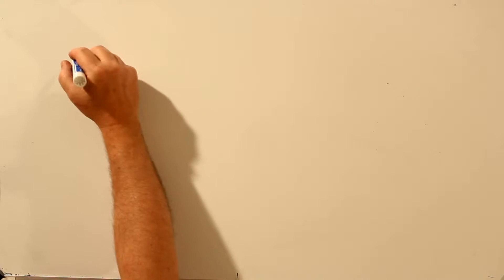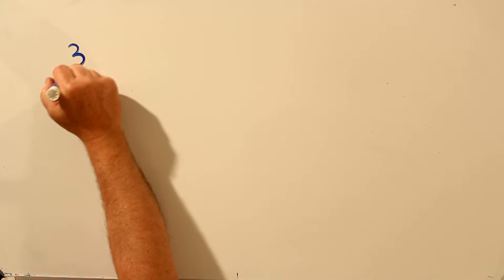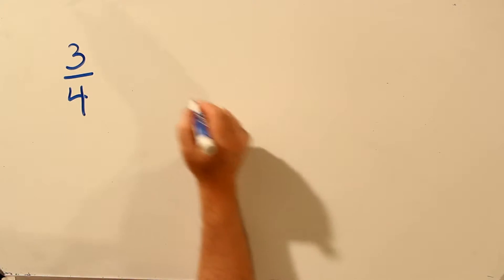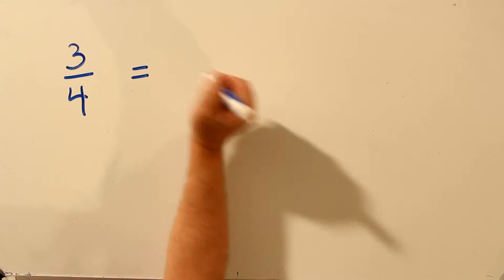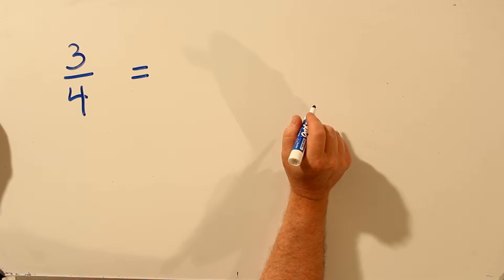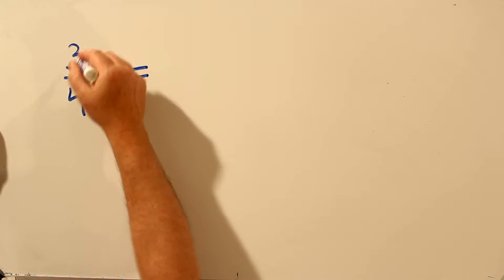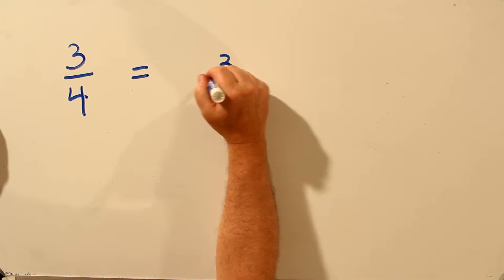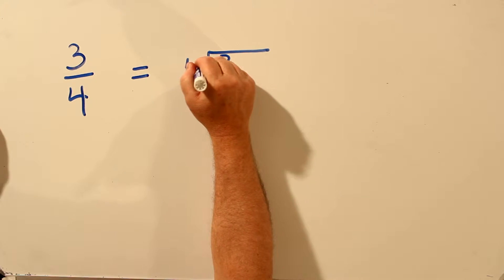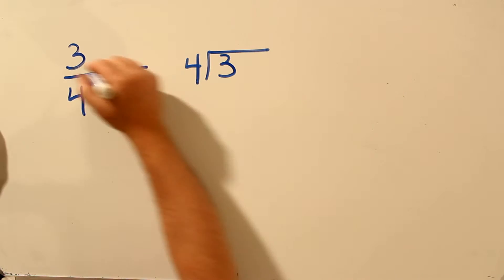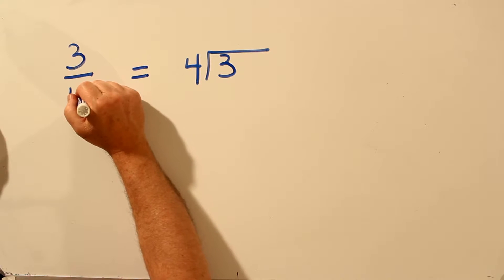We're going to go through the steps of how to convert a fraction, like 3 fourths, to a decimal. In order to convert a fraction to a decimal, 3 over 4, or 3 fourths, can be written as 3 divided by 4. And we actually do long division. 3 divided by 4.